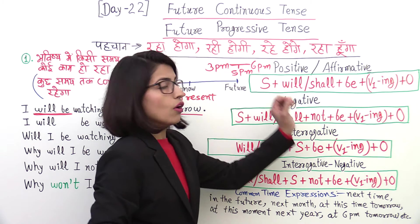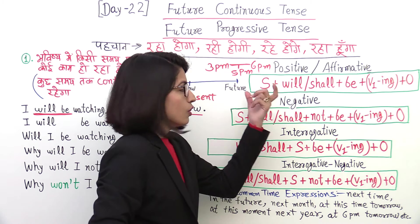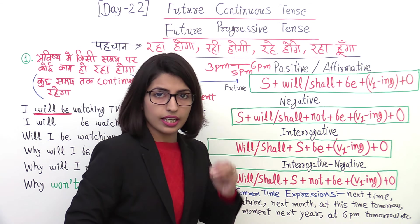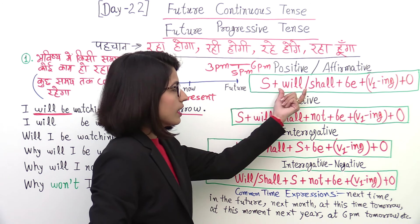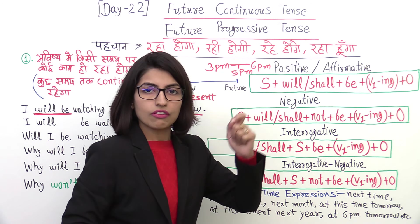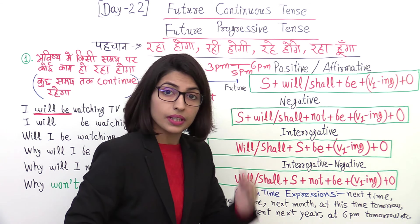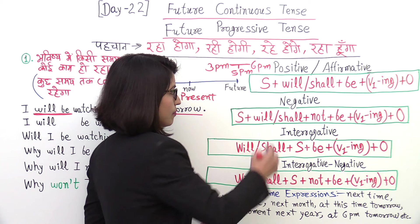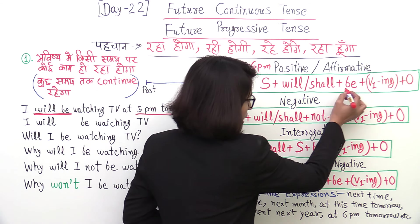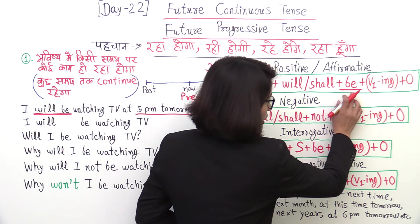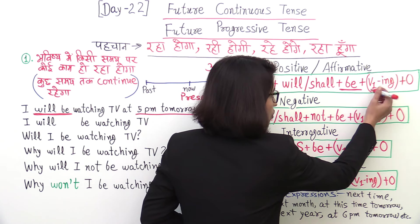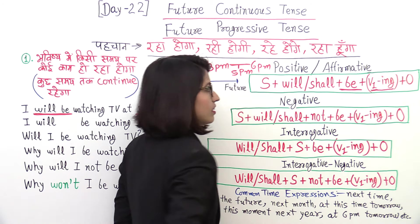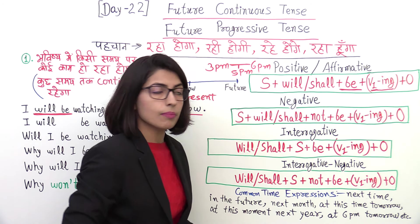For positive or affirmative sentences, the structure is: Subject + will or shall + be + V1 with -ing added (present participle form) + object. You can use 'will' with all subjects — I, we, you, they, he, she, it, or any name. With 'I' and 'we' you can also use 'shall'. So: Subject + will/shall + be + present participle + object.